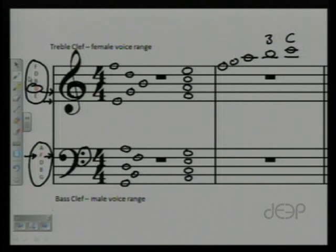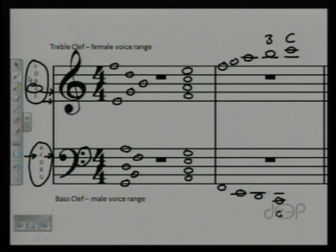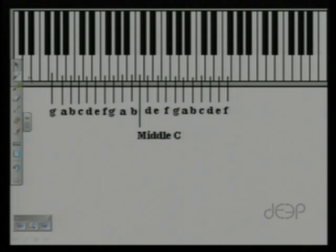Ledger lines go above and below the staff. We can do the same thing going down — F, E, D, C, and so on. We can keep using ledger lines as far as we want to go. When we see the treble and bass clef staff together, it's called a grand staff — typically what you see when you play piano. Now let's move to a graphic of a piano keyboard and talk about how these relate to the keyboard.